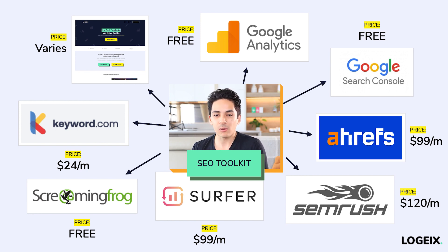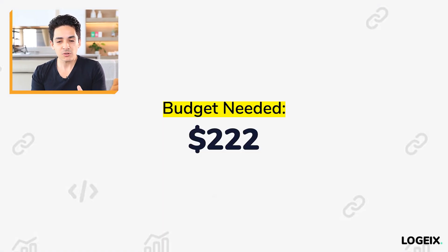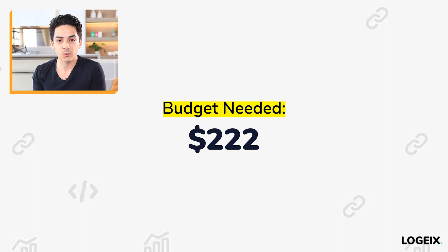Adding this all up, if you choose one tool — Ahrefs or SEMrush — this comes to around $222 a month needed to rank a typical website on the smaller side of the scale. You don't need to spend all of this; you can sign up for trials and cancel after. But if I were doing this to the best of my ability, I would suggest using these tools, which comes to around $222 per month.